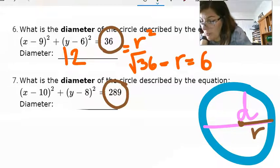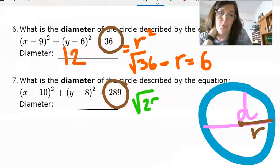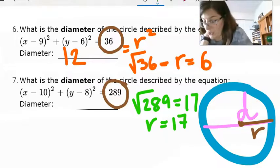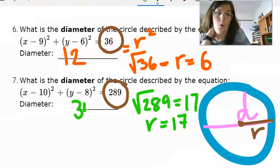Now, I got to take the square root of 289. The square root of 289 is equal to 17. So the radius is 17. So the diameter is whatever 17 times two is or 34.